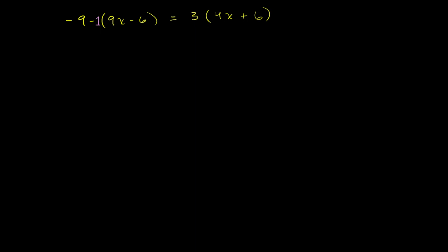On the left-hand side of our equation, we have our negative 9, and then we want to multiply the negative 1 times each of these terms. So negative 1 times 9x is negative 9x, and then negative 1 times negative 6 is plus 6, or positive 6.